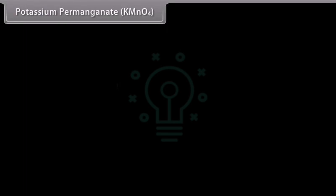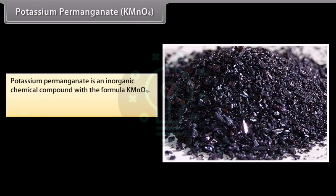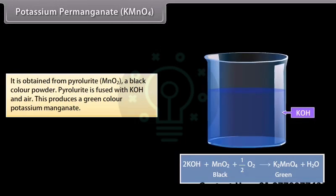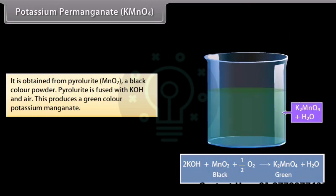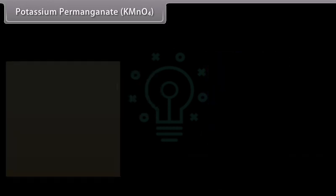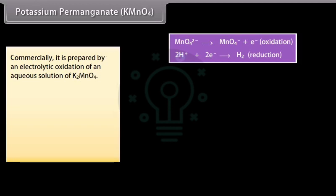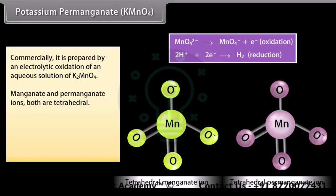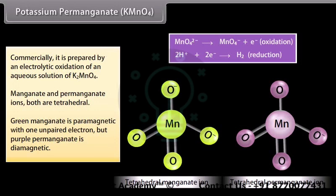Potassium permanganate (KMnO₄) is an inorganic chemical compound consisting of K⁺ and MnO₄⁻ ions. It is obtained from pyrolusite, a black colored powder. Pyrolusite is fused with KOH and air to produce green-colored potassium manganate. Commercially, it is prepared by electrolytic oxidation of an aqueous solution of K₂MnO₄. Both manganate and permanganate ions are tetrahedral. Green manganate is paramagnetic with one unpaired electron, but purple permanganate is diamagnetic.